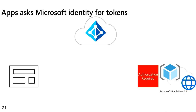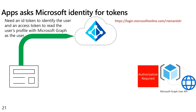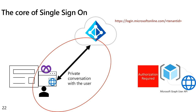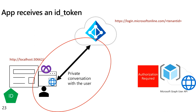Remember the flow we talked about: the application sends you to Azure Active Directory — specifically to login.microsoftonline.com with a tenant ID or slash common. We call it the common endpoint, which is used when you build a multi-tenant application. Once the conversation between the user and Azure Active Directory is done, we set the session cookie, and then send the ID token and the access token back to the redirect URI — in this case, localhost at port 30662.